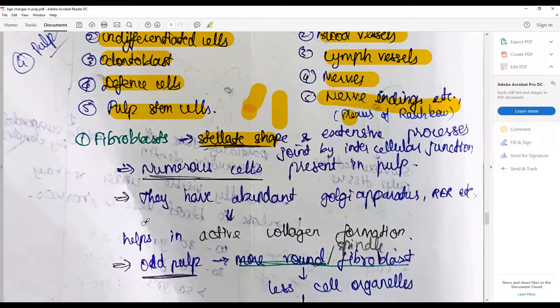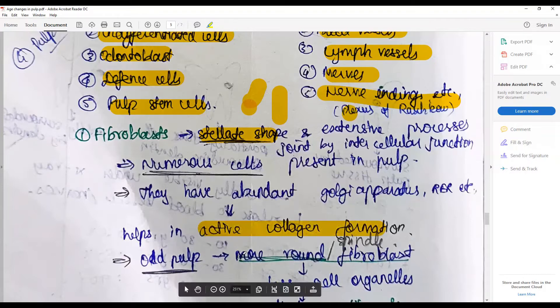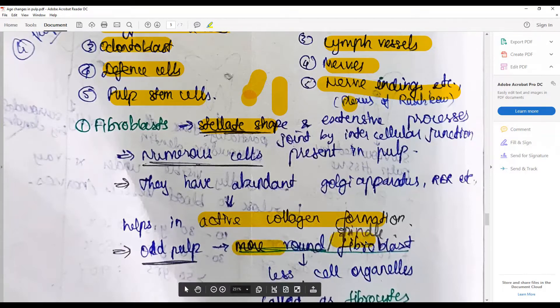They have abundant Golgi apparatus and endoplasmic reticulum because they are active in collagen formation. Often in older pulp they become more round or spindle or mature into spindle fibroblasts.